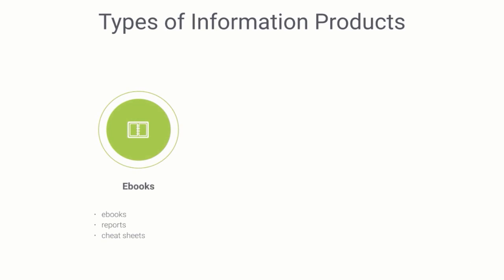We're going to talk about two main types throughout this video course, but there are actually three types of information products you can create. The first is ebooks, and you've probably seen ebooks everywhere. You have your basic ebooks, Kindle ebooks that you can sell on Amazon. This could be in PDF format — ebooks, short reports, cheat sheets, things like that. It doesn't have to be a 300-page ebook; it can literally be a five-page report dealing with a very specific problem.